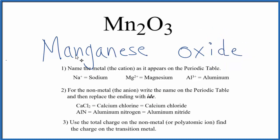So at this point, we have manganese oxide, but manganese is a transition metal. That means it can have different charges depending what it's bonded to. So here it's bonded to oxygen.